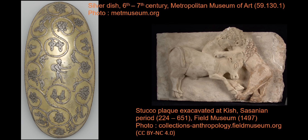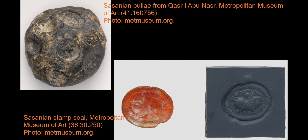Some late antique Iranian images might belong to an aristocratic production — that is to say, not clearly royal — including silverware, fabrics, and stucco decoration for houses. And finally, an important group of images displayed on seals and gems gives access to a more widely shared visual culture within Sassanian society.